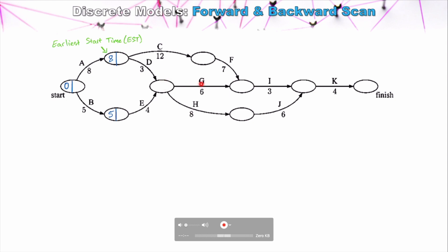When we look at the node where Tasks G and H require both Tasks D and E to be completed, we have to consider both options. Through Task E, we could start G and H as early as nine units of time. However, we can't start G and H until Task D is also complete, and Task D can't be completed until 11 units of time. So the earliest possible start time we enter here is 11 units, despite Task E being completed as early as nine. This means we can delay Tasks B and E by two units — referred to as slack time.